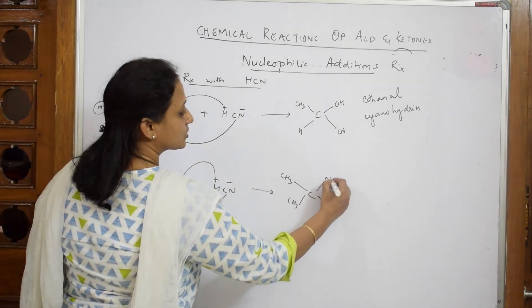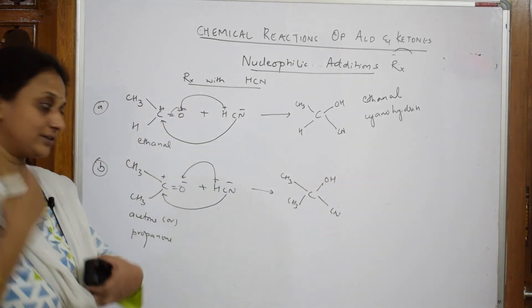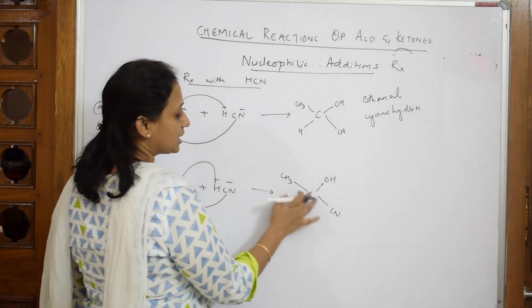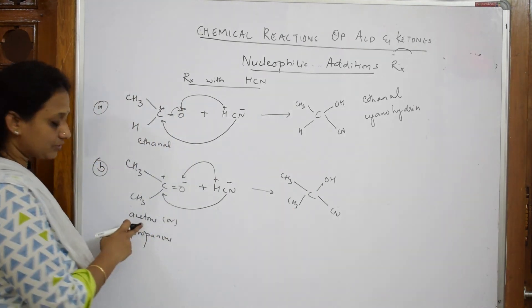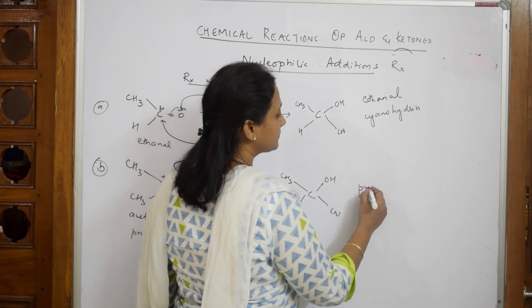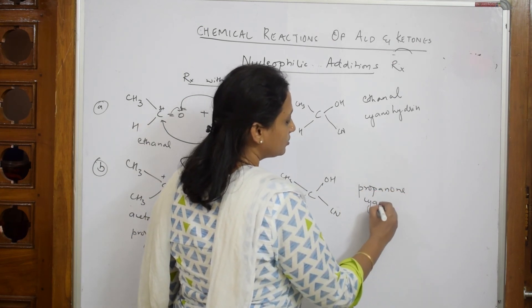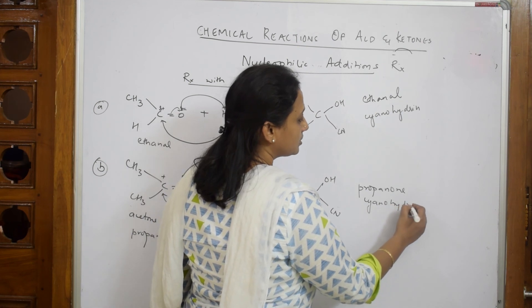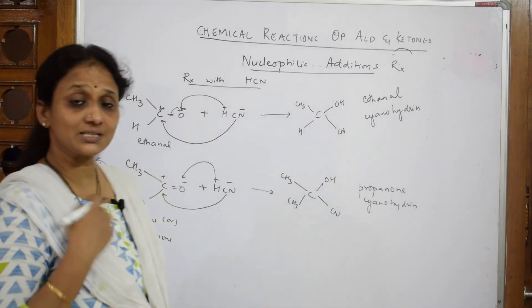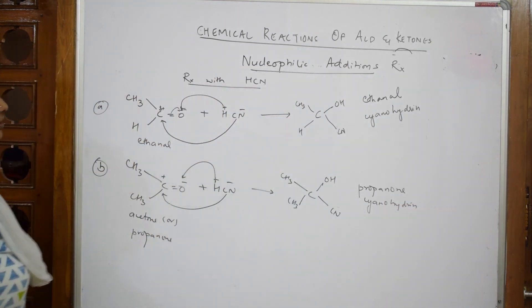What type of cyanohydrin is this? You have three carbons from acetone or propanone. You can write propanone cyanohydrin.